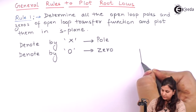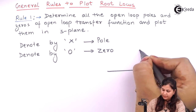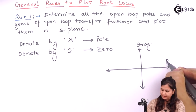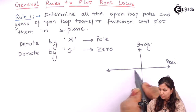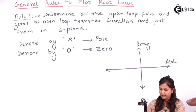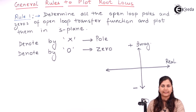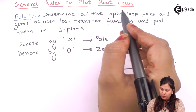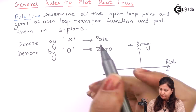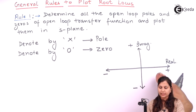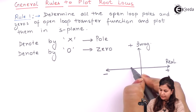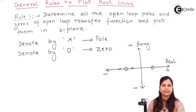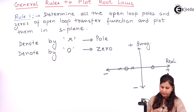The S-plane consists of the imaginary and the real axis. The real axis is the horizontal line and the vertical line is the imaginary axis — positive imaginary, negative imaginary, positive real, and negative real axis. We obtain the poles and zeros in the first step and then plot them on this S-plane. This was all about the first step.